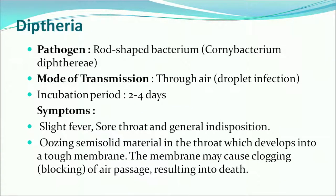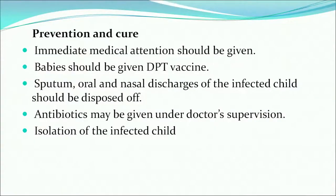The next disease is diphtheria, caused by the rod-shaped bacterium Corynebacterium diphtheriae. Mode of transmission is through air or droplet infection, with an incubation period of 2 to 4 days. Symptoms include slight fever, sore throat, general indisposition, and oozing semi-solid material in the throat which develops into a tough membrane that can block the air passage and result in death. Prevention includes DPT vaccine for babies, proper disposal of sputum and nasal discharges, antibiotics under doctor supervision, and isolating the infected child.